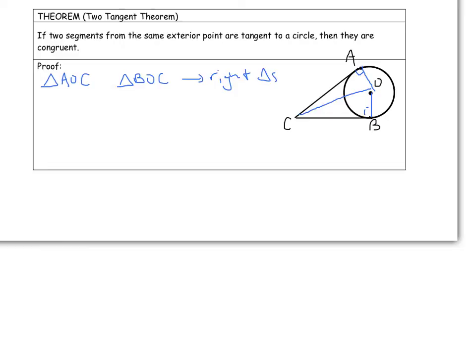I know that AO and BO are congruent because they're both radii of the same circle. I also know that OC is congruent to itself. That's the reflexive property.